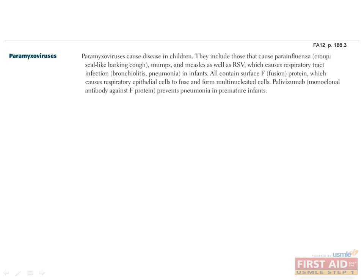The paramyxovirus family contains the following viruses: parainfluenza, rubeola or measles, mumps, and RSV. Paramyxoviruses are the most important causes of respiratory infections in infants and young children under the age of 5. Parainfluenza can cause the common cold and croup. Croup affects the larynx, trachea, and bronchi with symptoms such as fever, hoarse barking cough, laryngeal obstruction, and inspiratory stridor.